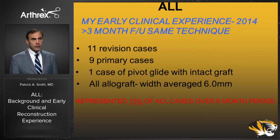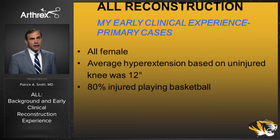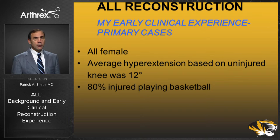In my primary cases, looking back at the records, all were female. Average hyperextension based on the uninjured knee was 12 degrees. Eighty percent of these patients were injured playing basketball — again, all female in my primary ALL with ACL reconstruction group.